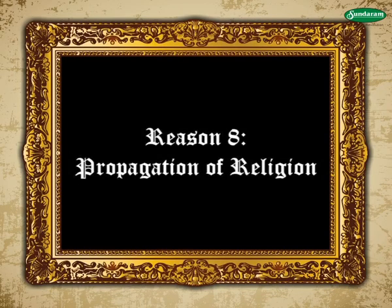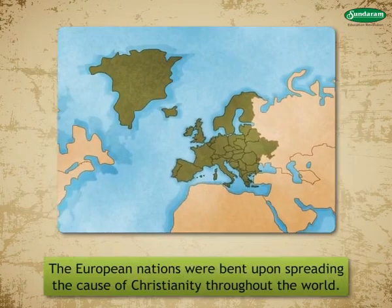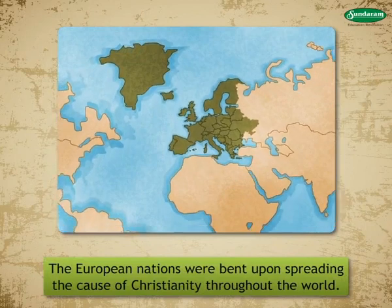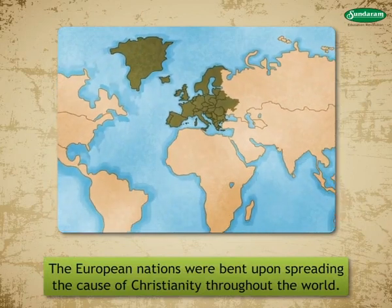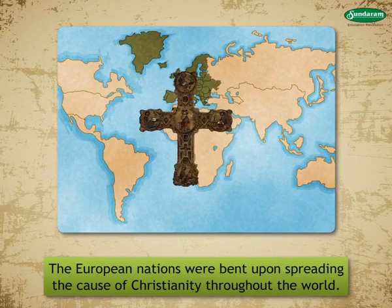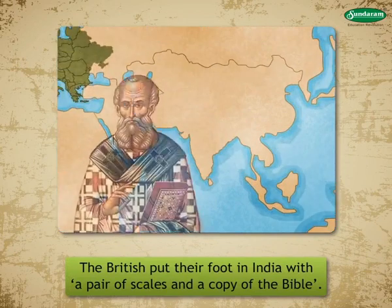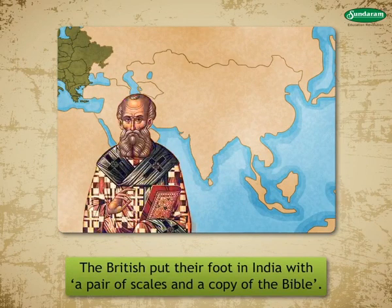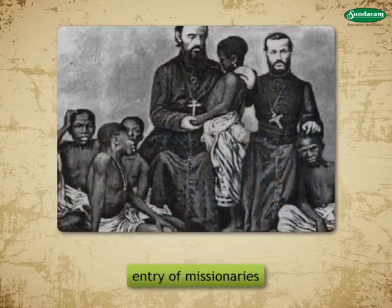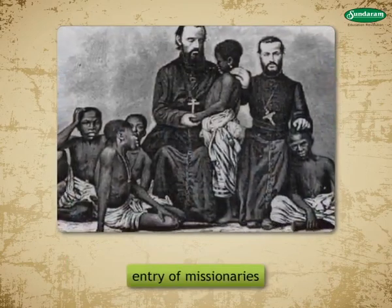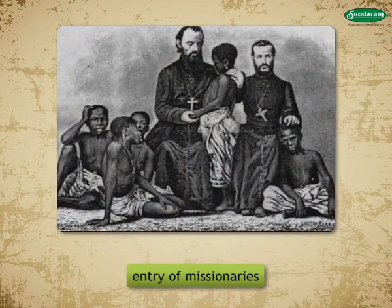Reason 8 — Propagation of Religion: The European nations believed their white man's religion and culture were superior, and therefore propagated Christianity throughout the world. The British put their foot in India with a pair of scales and a copy of the Bible. Establishment of the colonies was followed by the entry of missionaries for the purpose of spreading their religion, which in turn intensified imperialism.